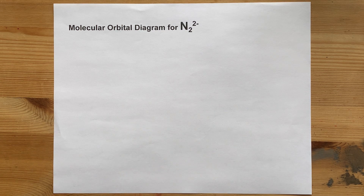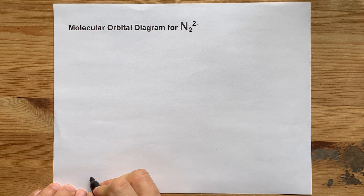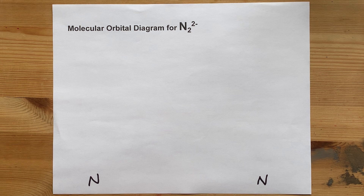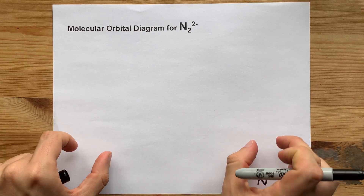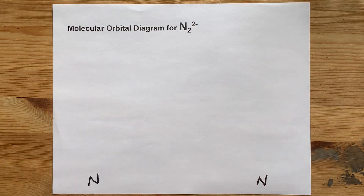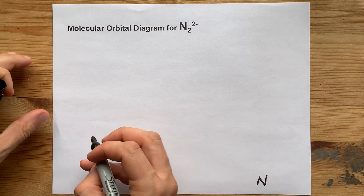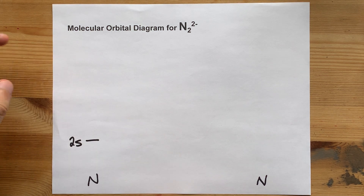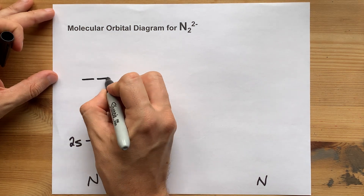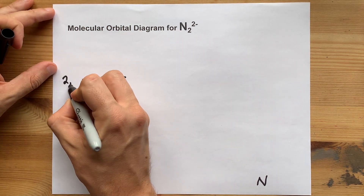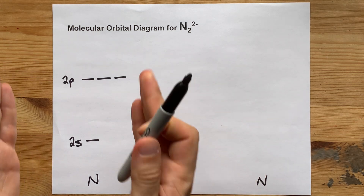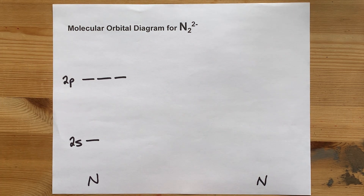Molecular orbital diagram for N2 with a minus-two charge. We're going to need to draw the atomic orbitals of two nitrogen atoms to start. You can draw the 1s non-bonding orbitals if you'd like, but let's start with the actual valence shell. You've got a 2s subshell in a nitrogen atom, and then three 2p orbitals, all at the same energy. Here in black, we have the atomic orbitals for nitrogen.